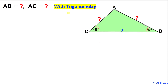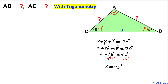Here is our first method with trigonometry. Let me label angle alpha at vertex A, angle beta at vertex B, and gamma at vertex C. Recalling that the sum of all angles equals 180 degrees: beta is 30 degrees and gamma is 45 degrees, so angle alpha turns out to be 105 degrees.